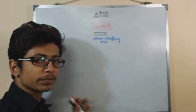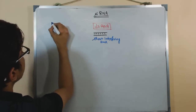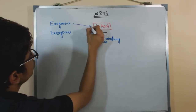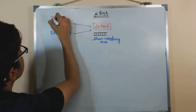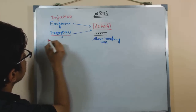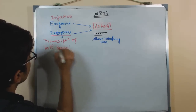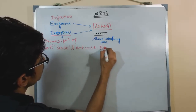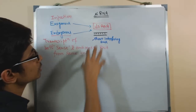This structure of short interfering RNA can be produced inside the cell from two different sources. One source is the exogenous source; another is the endogenous source. These two sources can produce double-stranded RNA inside the cell. The exogenous source means injecting a double-stranded RNA copy from outside. The endogenous source can be transcription of both sense and antisense RNA strands from the same loci.